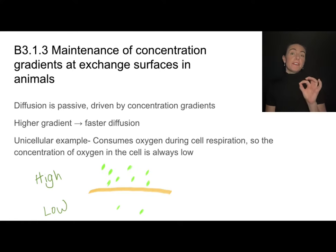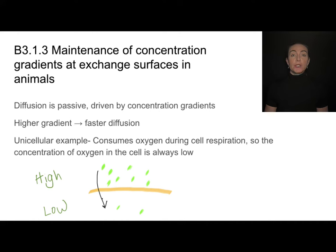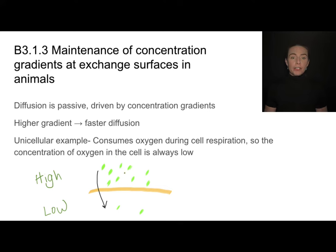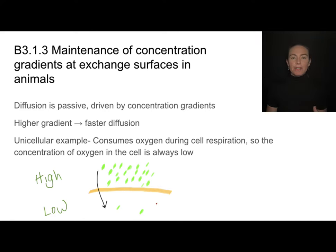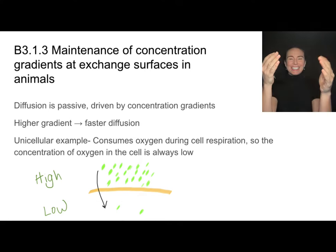Gas exchange takes place via diffusion, which is the passive movement of molecules from areas of high concentration to areas of low concentration. It's driven by the concentration gradient, so the process is much faster when this concentration gradient is large — the larger the difference, the faster it goes. For unicellular organisms, the concentration of oxygen inside remains low because those organisms consume it, continually creating a concentration gradient that drives diffusion.